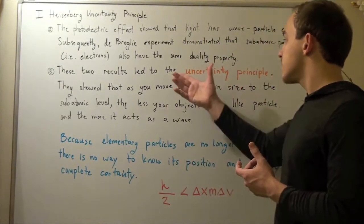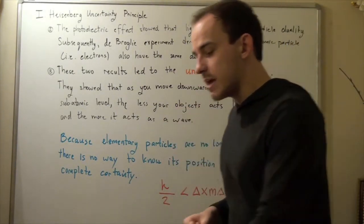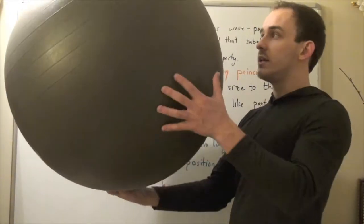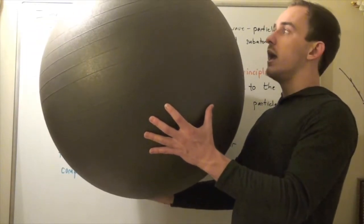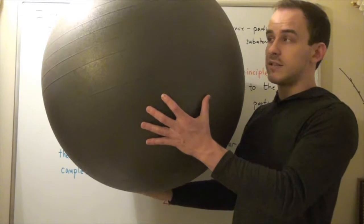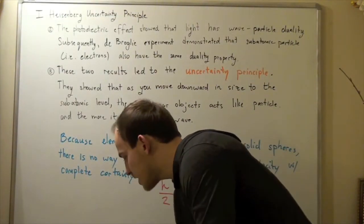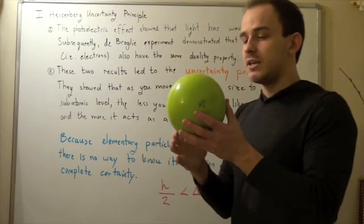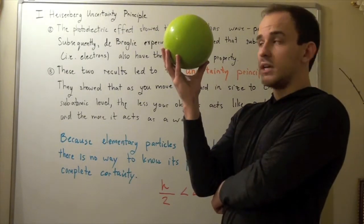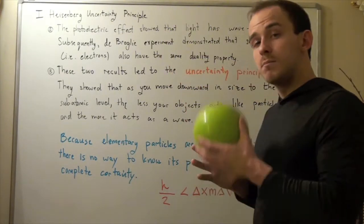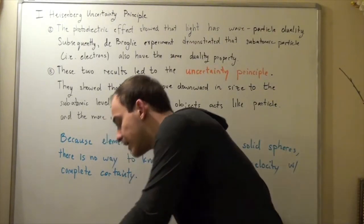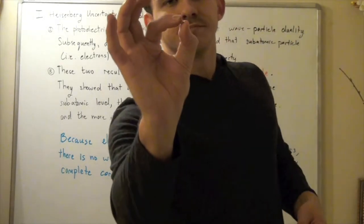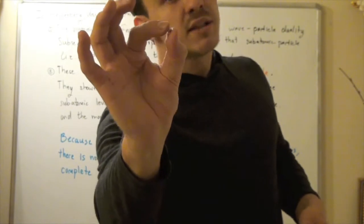To demonstrate what this uncertainty principle states, I'll use the following example. Suppose I have this relatively large ball — from where you're sitting, you can probably tell where the ball is, and you can tell that the ball isn't moving, so you can tell its velocity. Now suppose I go smaller, hold up this ball — once again relatively large, and you could probably tell it isn't moving and could tell where it is. Now suppose I go even smaller, down to this really tiny marble, which you probably can't see from where you're sitting — there's my particle, my solid sphere.